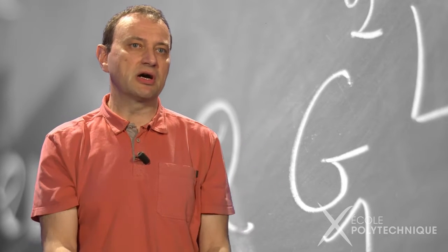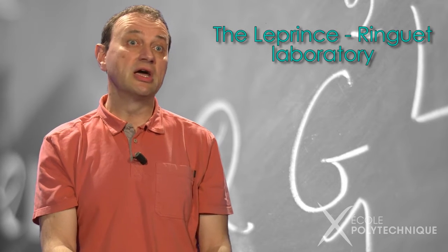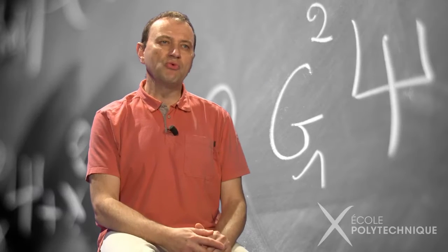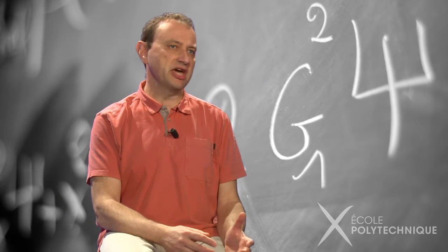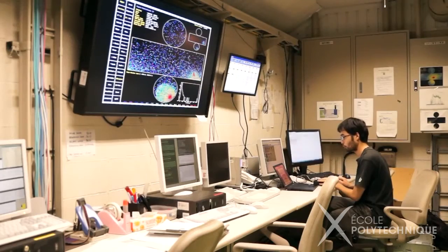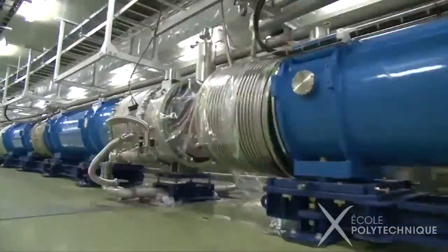To precisely determine the mass of neutrinos and their probabilities of transformation, huge experiments are conducted worldwide, experiments to which the Le Prince-Ringuet laboratory at École Polytechnique actively contributes. We work on the experiment T2K in Japan.